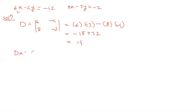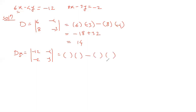Now we find Dx. Instead of x coefficients, we write the constants minus 12 and minus 2, while y coefficients minus 4 and minus 3 remain as they are. Cross multiplying: minus 12 times minus 3 is plus 36, and minus minus plus gives 2 times 4 which is 8. So 36 minus 8 equals 28.